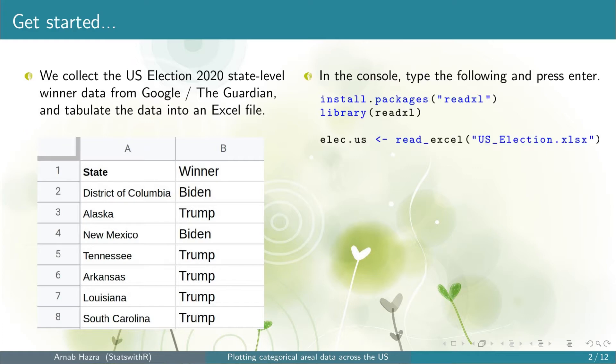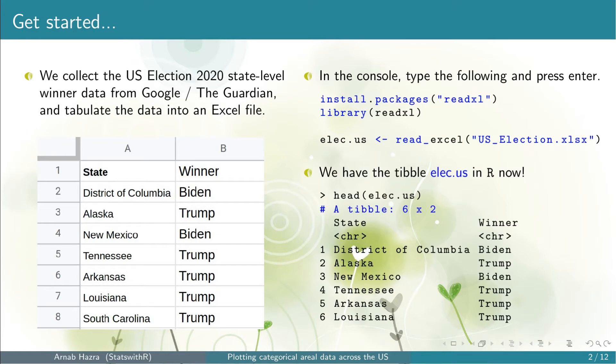To read the data from the Excel sheet we need the package readxl. So we install the package using the function install.packages and call the package using the function library. Next we read the data using the function read_excel. Once we run the code, a table called elect.us will be generated. Let's run. Now let's see how the table looks like.